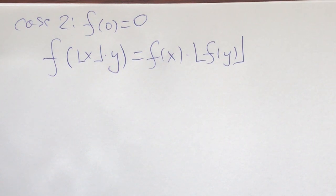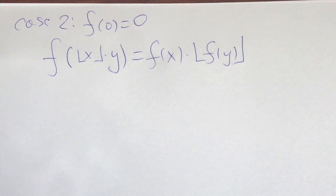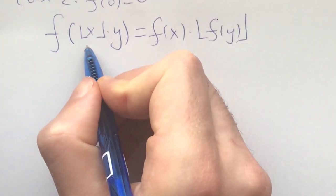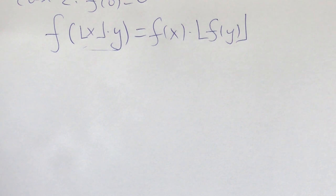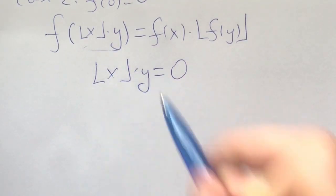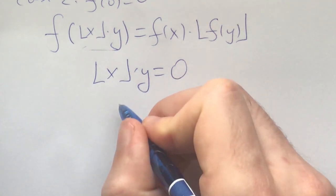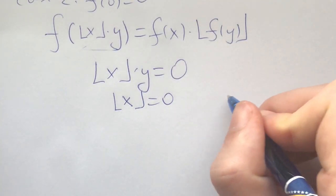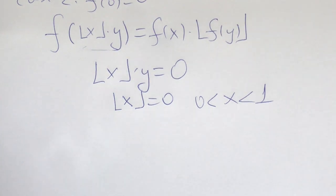Now let's go to the next case where f of zero equals zero. I invite you to pause for five to twenty minutes to try this case. Plugging in y equals zero doesn't give us anything new — it just zeros everything out. But we can still use f of zero equals zero by zeroing out part of the functional equation, namely by plugging in x values such that the floor of x is between zero and one.